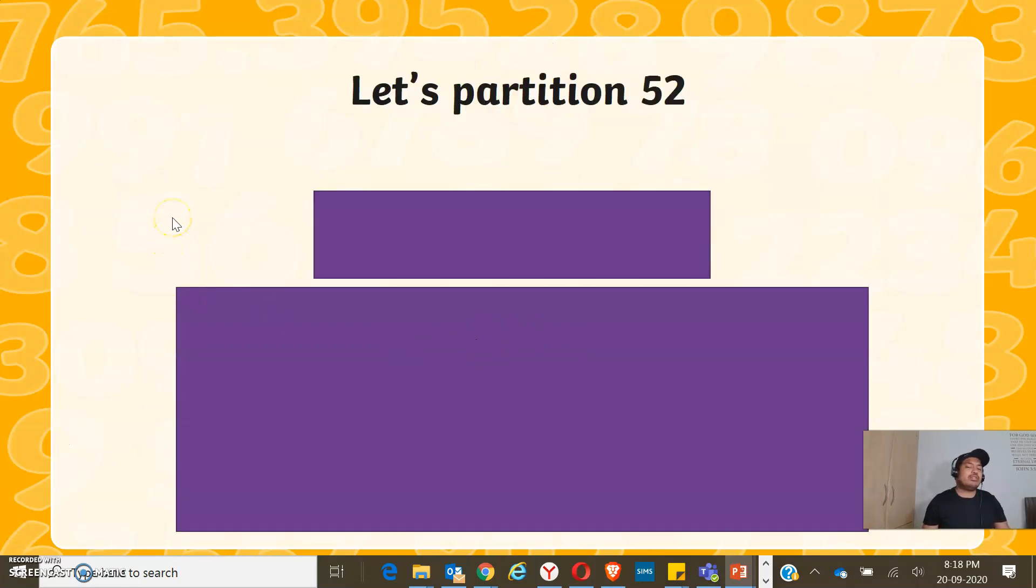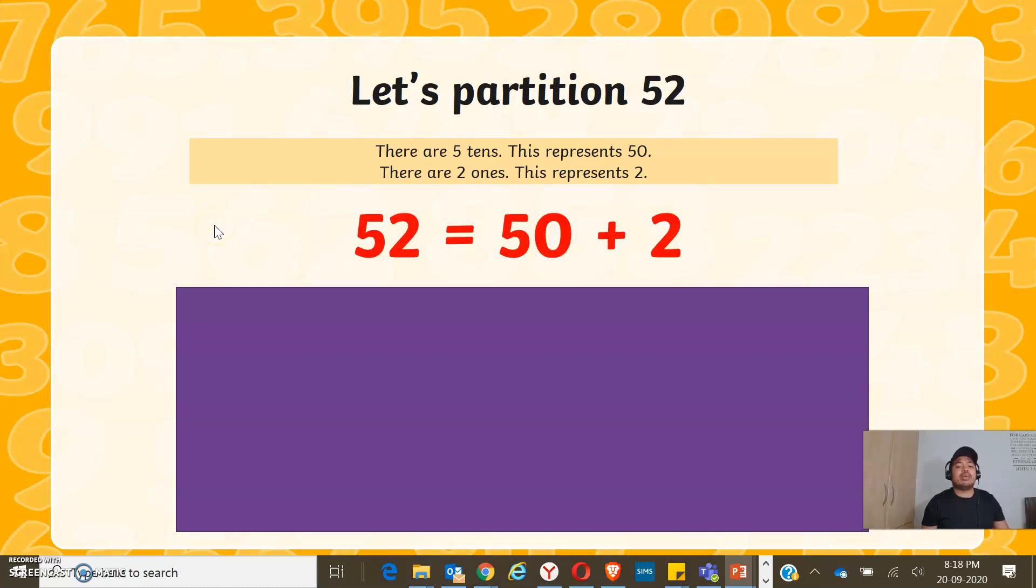Now let's partition 52. 52, remember, is made up of 5 tens that represents 50 and 2 ones that represents 2. Therefore, 52 is made up of 50 plus 2.